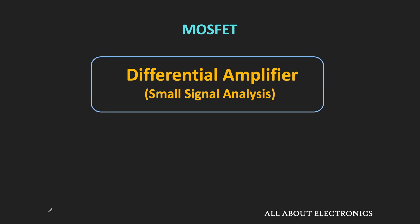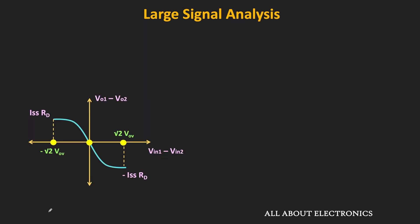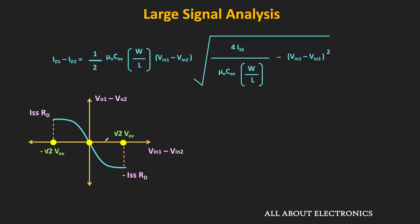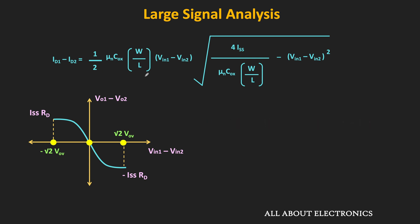Welcome to the YouTube channel all about electronics. In this video we will see the small signal analysis of the differential amplifier, and with the help of the small signal analysis we will find the gain of this differential amplifier. In the previous video, through a large signal analysis we found the operating range of the differential input and the relationship between the differential input and differential output. To get the exact relationship between the differential output and differential input we just need to multiply that expression by minus Rd. However, as you can see, the relationship between this input and output is non-linear.